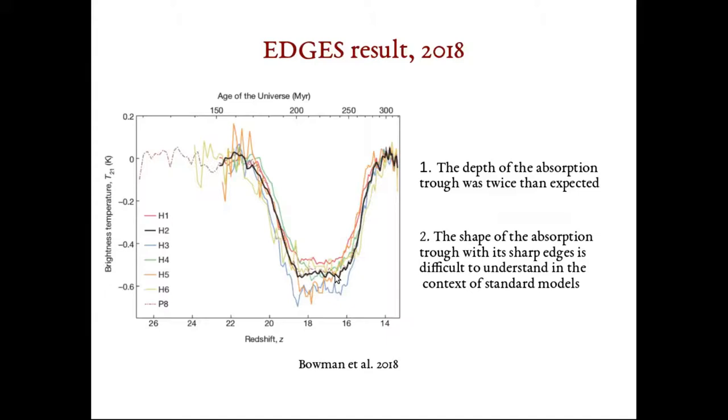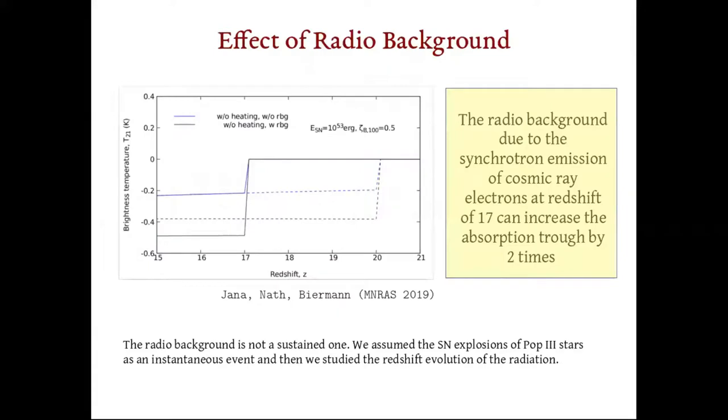Following the detection, numerous efforts have been made to understand the depth of the absorption trough. Instead of invoking any exotic physics, we decided to check if the background radiation created by the Population III supernovae explosions, which is an inevitable event in the high redshift, can explain the trough. Cosmic ray electrons accelerated in those explosion sites interact with the IGM magnetic field and emit synchrotron radiation in the radio band. This excess radio background can increase the depth of the absorption trough.